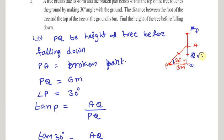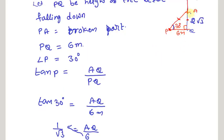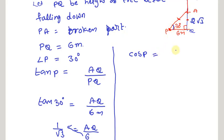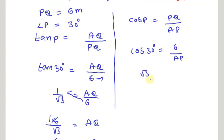Now in triangle PQA, we know angle P and need to find the hypotenuse AP. With respect to angle P we know the opposite side AQ and adjacent side PQ. I am going to use cos. Applying cos P: cos P = adjacent side PQ / hypotenuse AP. So cos 30 = PQ / AP.